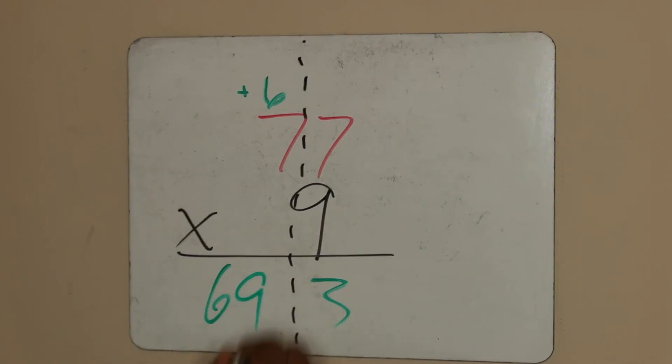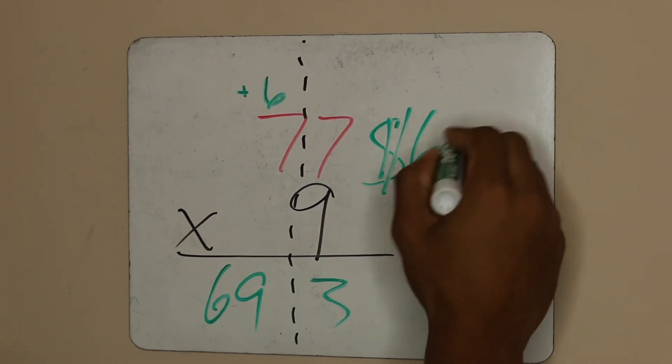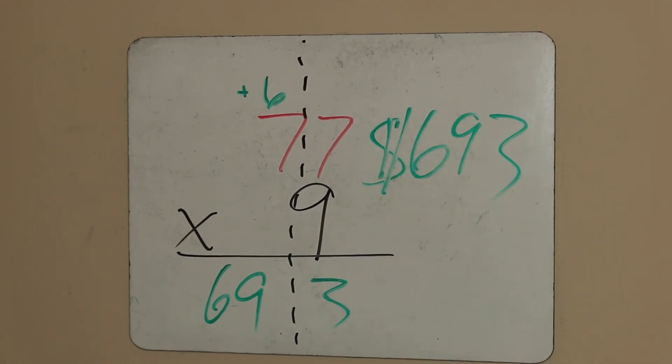Boom. So, brother, you made $693 selling Yeezys at school and you didn't have to count all the ones.